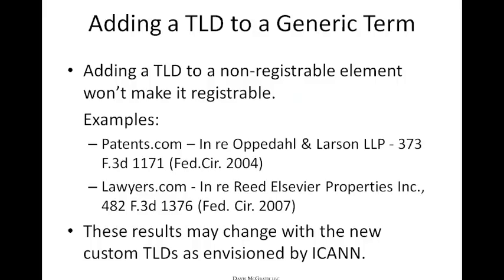Adding a top-level domain to a normally non-registerable element will not make it registerable. For example, patents.com and lawyers.com were litigated, and in both cases — since they were advertising patent-related or lawyer-related services — they were deemed generic. Just adding a TLD to a generic element won't make it registerable. I do note that result will likely change with the new custom TLDs, as those could be source identifiers as envisioned by ICANN.